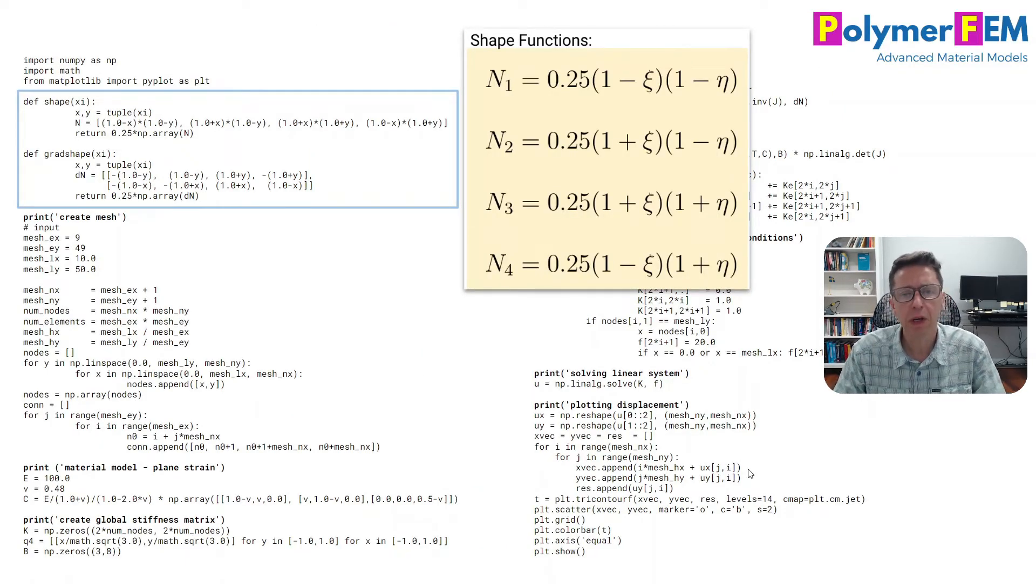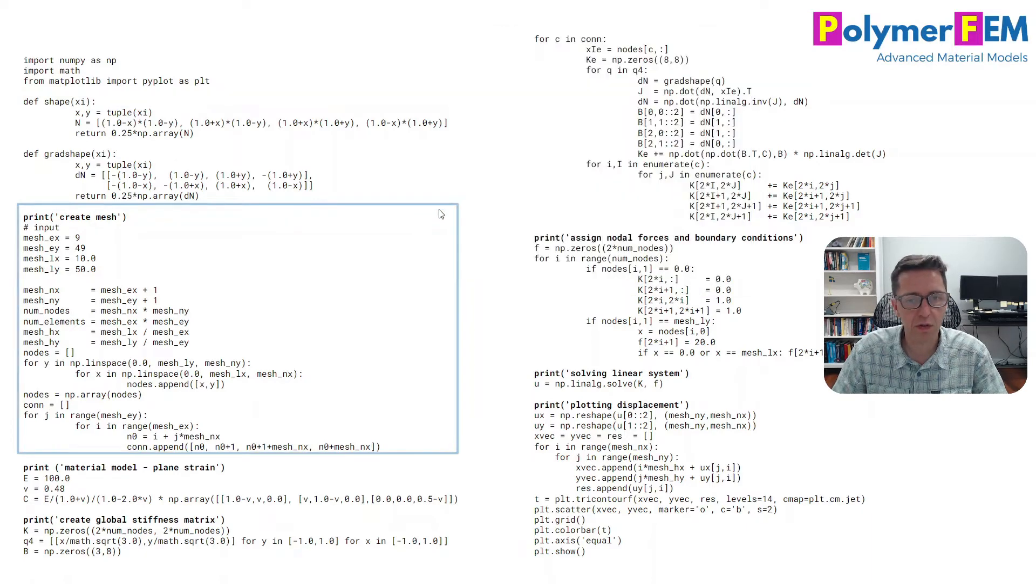So if I go back now to the first Python function on the Python code that I wrote some time ago, we can see how these code terms come from the equations we derived. So the first here, this section here, is the shape functions and here are the equations that we introduced. These are the gradients of the shape functions which is the derivatives of these. So it's very simple.